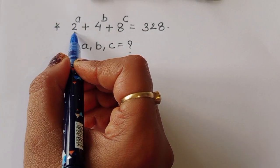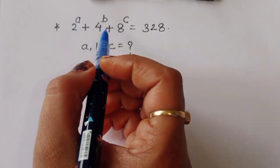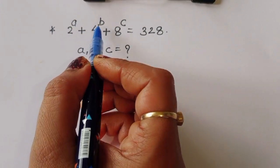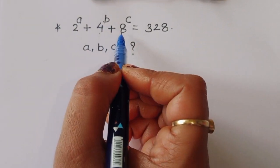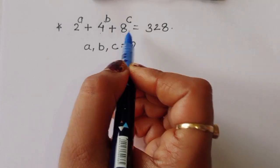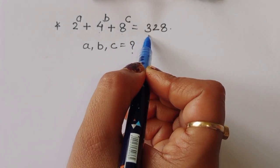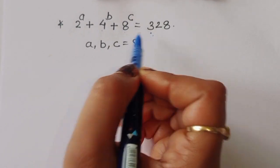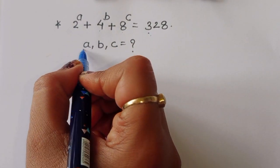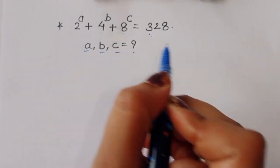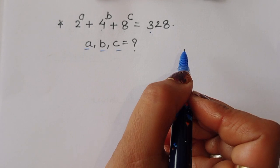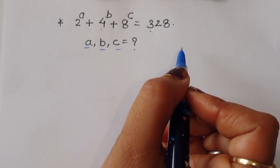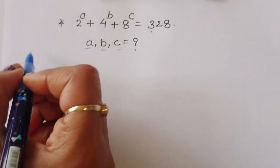The question is: 2 to the power A plus 4 to the power B plus 8 to the power C is equal to 328. We have to find out the values of A, B, and C. Let's see the solution.